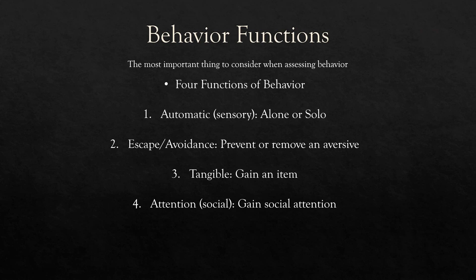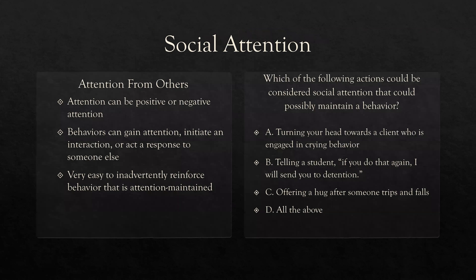Escape avoidance — you're preventing or removing an aversive. Tangible — you're gaining an item. And then attention, social attention — you're gaining social attention. So let's start there. Social attention is perhaps the most common type of function for behavior. You're gaining attention from others. That could be teachers, peers, siblings, or parents. Social attention is maintaining or increasing the behavior.